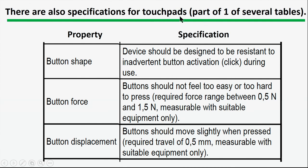Here's one more example — touchpads. The same level of detail applies. For button force, the required range is 0.5 to 1.5 Newtons. There are also issues for button travel and so forth. Lots of details in these documents — if you're designing or assessing these devices, these are the kinds of documents you want to look at.